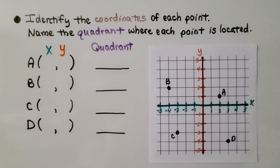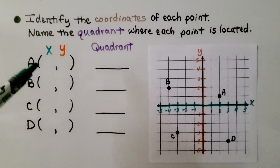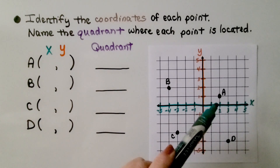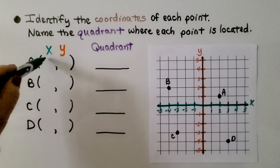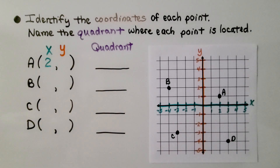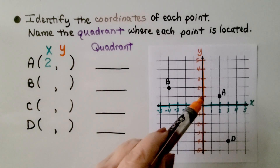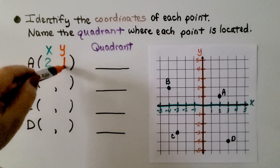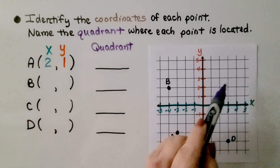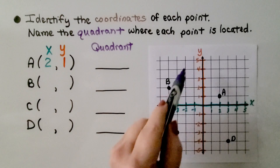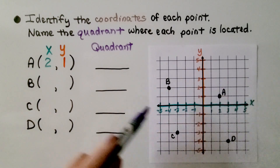Identify the coordinates of each point and name the quadrant where each point is located. For point A, we need to find the x and y values. On the x-axis it's at positive two, and looking over to the y-axis we see it's at positive one. It's in the upper right corner — the beginning of writing a letter C — so it's in quadrant one.